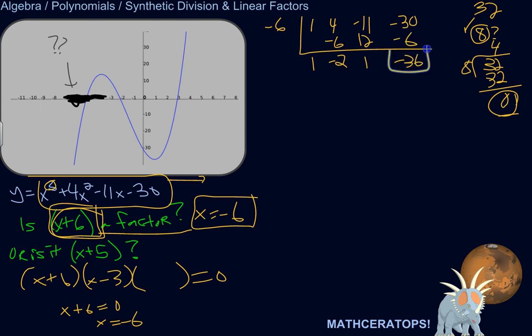This last number is the remainder. My remainder is not 0. So therefore, negative 6 is not a root. Therefore, x plus 6 is not one of the linear factors of this polynomial. You get a remainder. If you get a remainder of 0, you would be good.